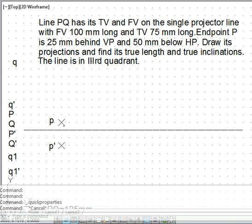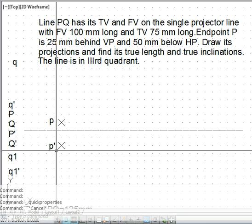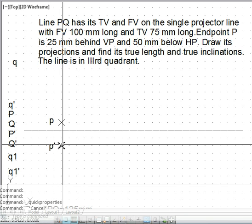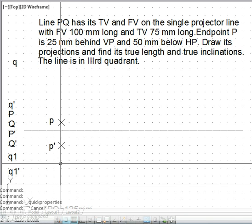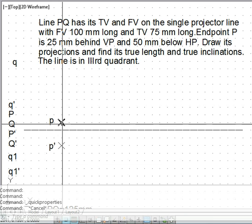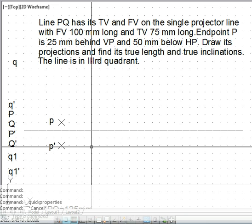This information about point P has been recorded here as you see. Point P dash 50 mm below XY line because it is below HP, and point P has also been located with the information that it is 25 mm behind VP.